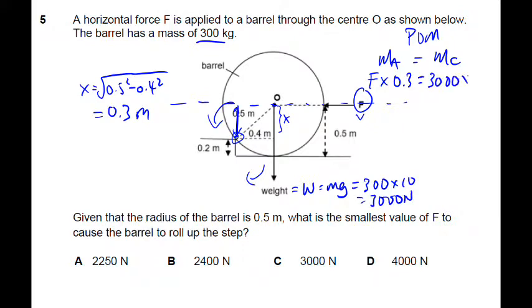So the weight times the perpendicular distance. And in this case, take note, this is the line of action of the weight. The pivot is over here. This will be the perpendicular distance 0.4 meters.